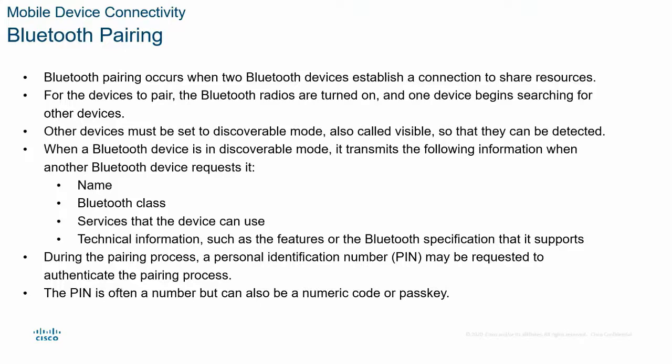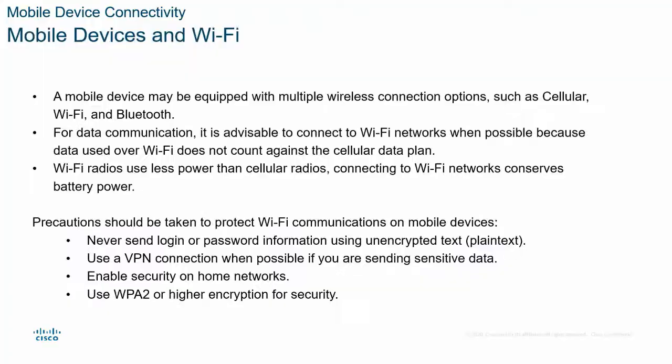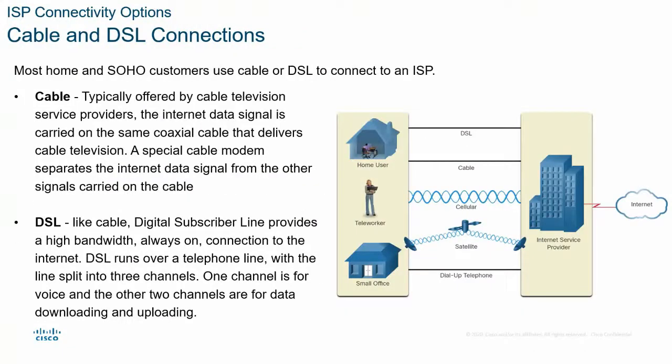This device can connect with various Bluetooth devices. We have to set a visible mode for Bluetooth on our device, and we have to check a PIN and number. So, we have to connect with different technologies like Bluetooth, cellular networks, and Wi-Fi. We also have to check the internet, satellites, cable TVs, DSLs, fiber optics, etc.